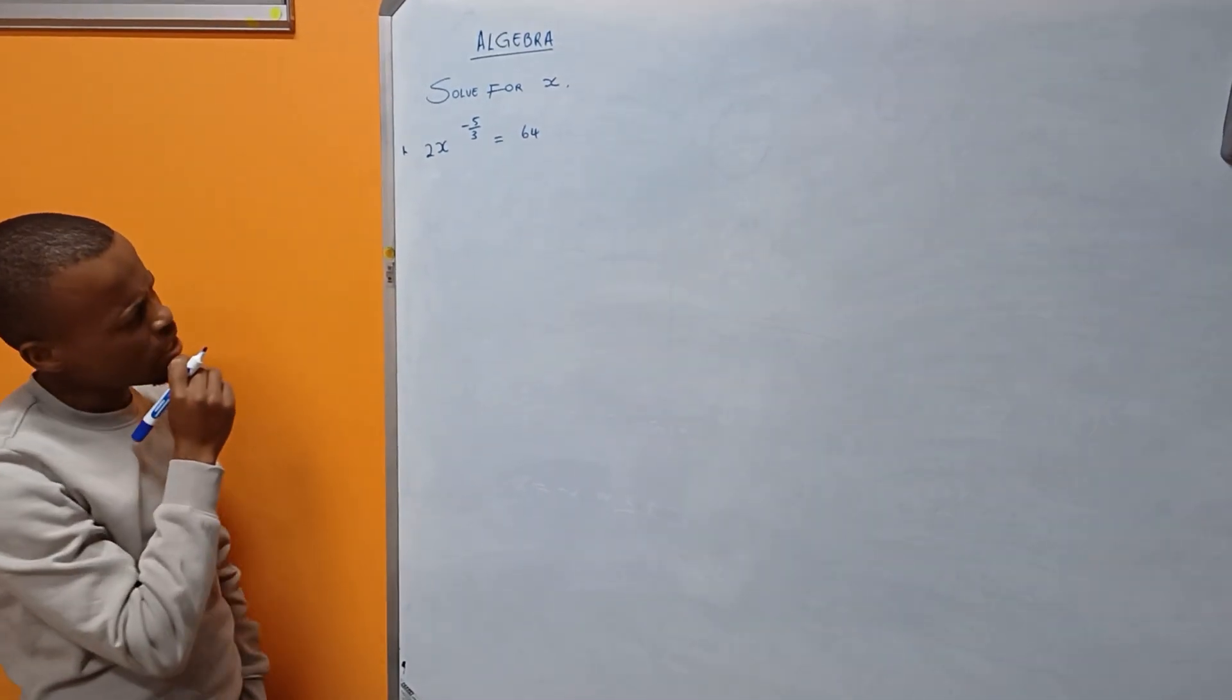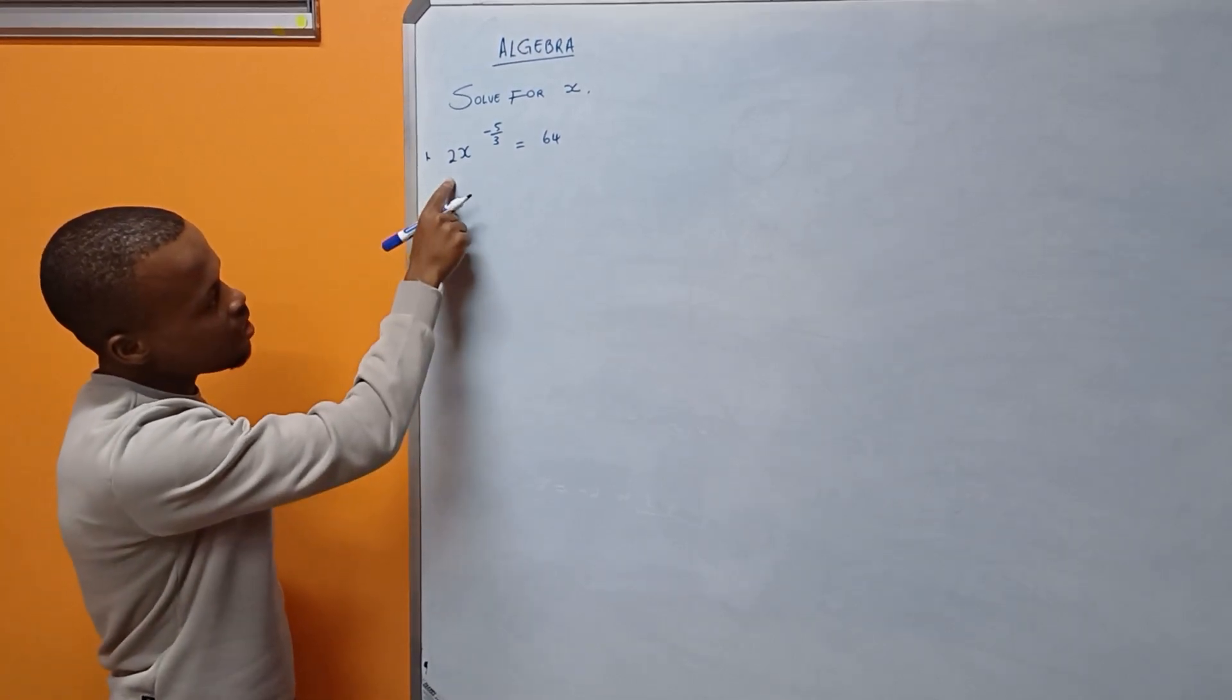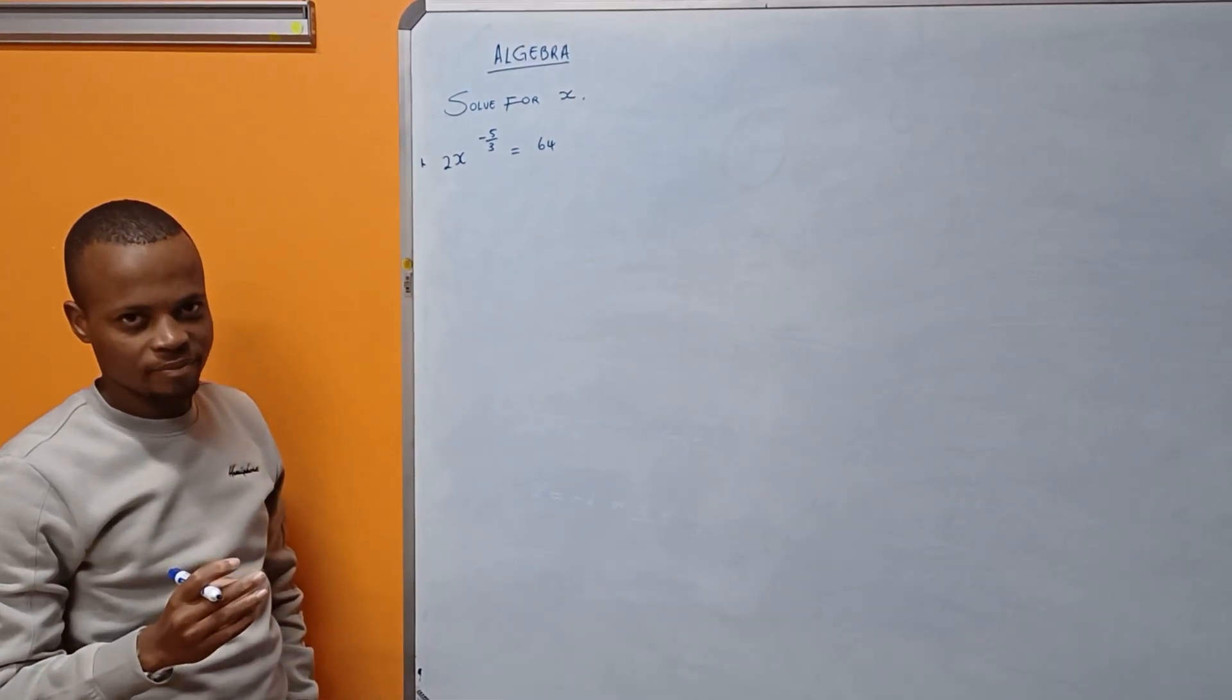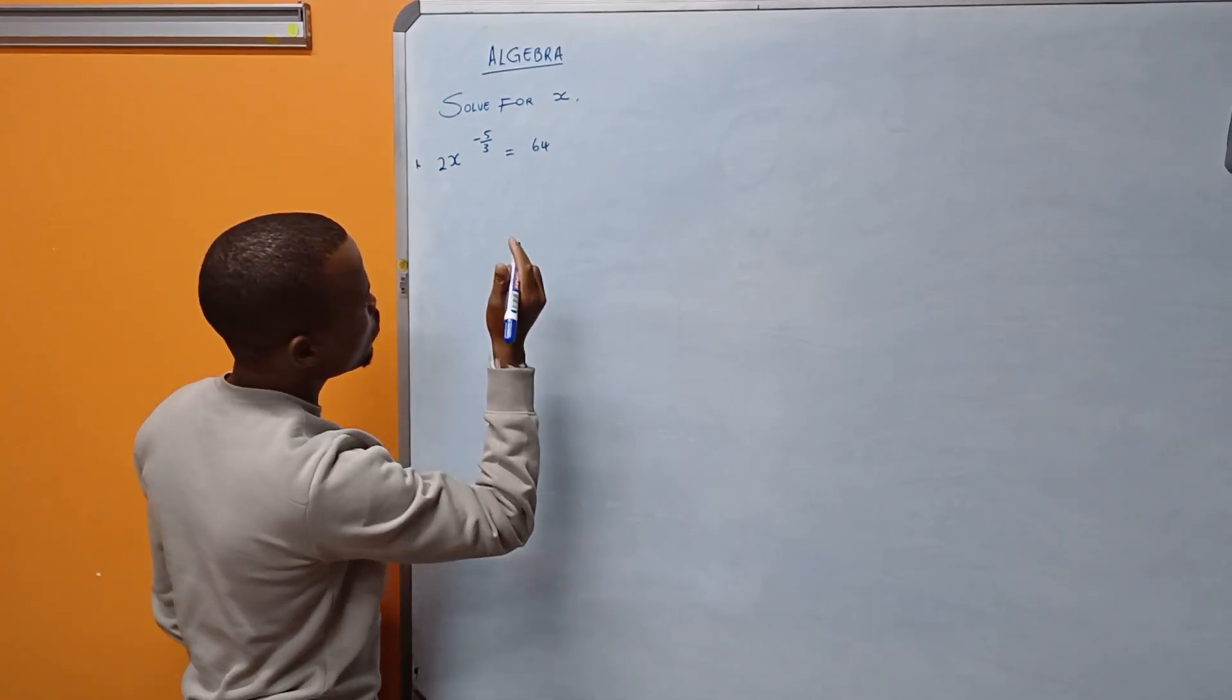How am I going to take this problem? The first thing to do is to eliminate the coefficient of x. How do I eliminate the coefficient of x? By dividing both sides by 2.